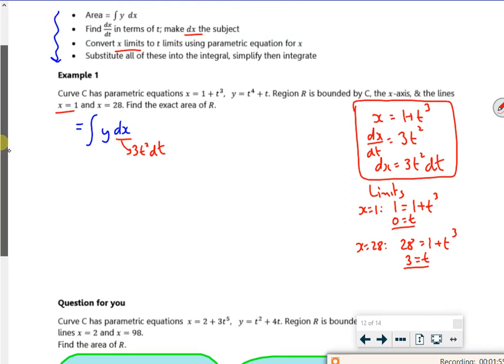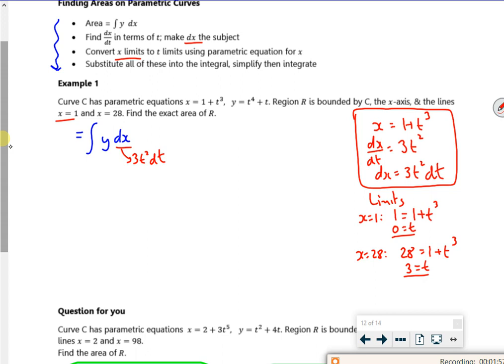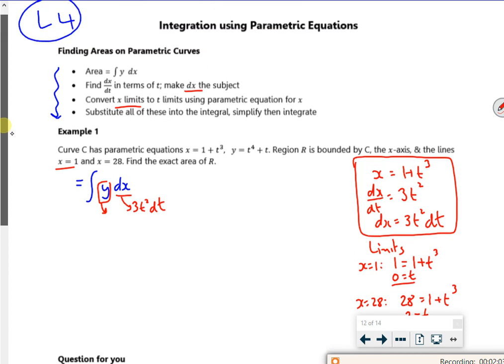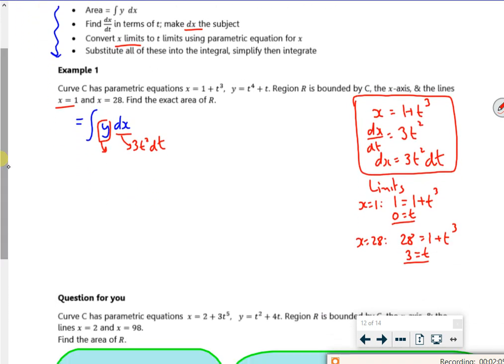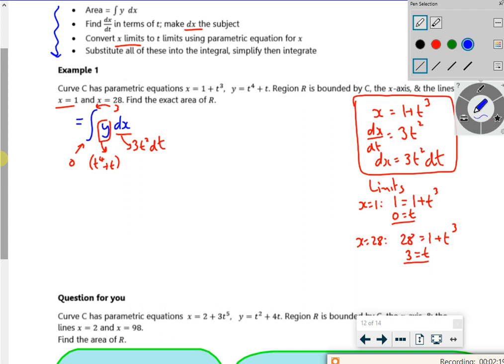And then I substitute anything into t. So that y changes. Y is going to be t to the 4 plus t. And that bottom limit we've said is going to become 0, and that top limit we've said is going to become 3. So my integral changes. It's a bit like integration by substitution really, isn't it?